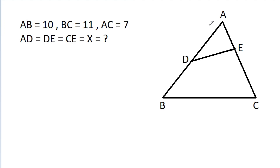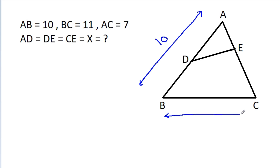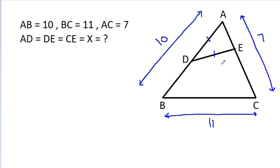In this video, we have given that AB is equal to 10, BC is 11, and AC is 7, and AD is equal to DE is equal to CE, that is X. So we have to find the value of X.